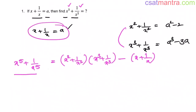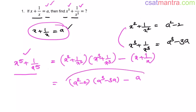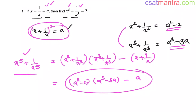Therefore, x power 5 plus 1 by x power 5 equals (x square plus 1 by x square) times (x cube plus 1 by x cube) minus (x plus 1 by x), which is (a square minus 2)(a cube minus 3a) minus a. Just substitute the value of a given in the problem. No need to remember complex formulas — just square it and cube it to derive these values whenever needed.